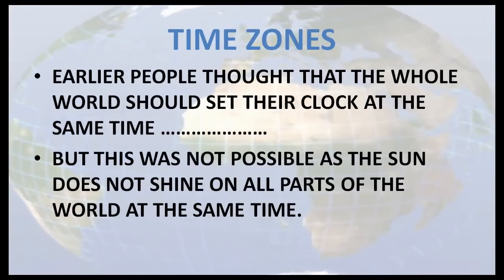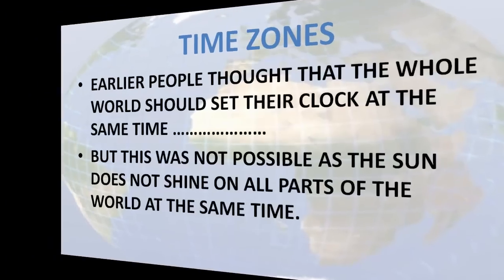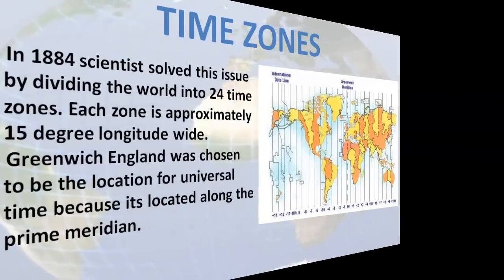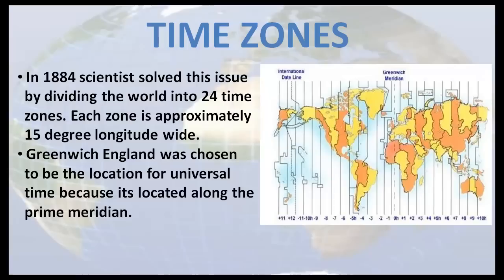Earlier, people thought that the whole world should set their clock at the same time. But this was not possible as the sun does not shine on all parts of the world at the same time. In 1884, scientists solved this issue by dividing the world into 24 time zones. Each zone is approximately 15 degrees longitude wide.